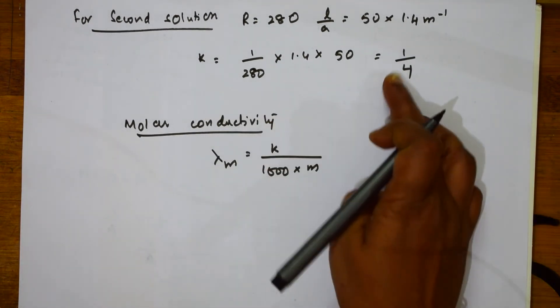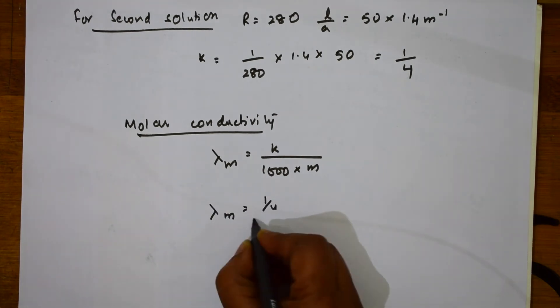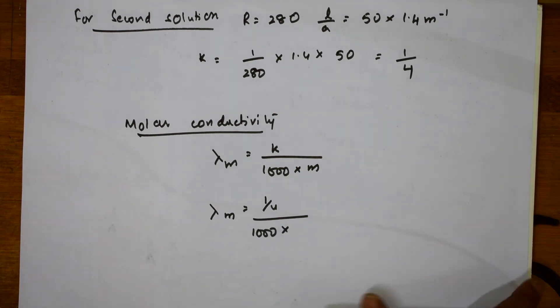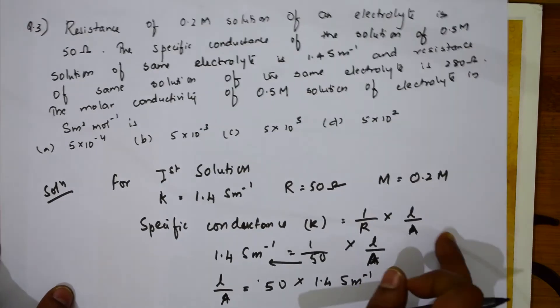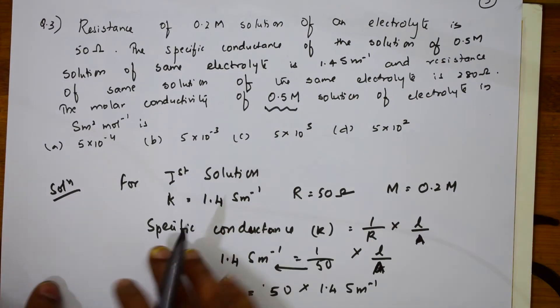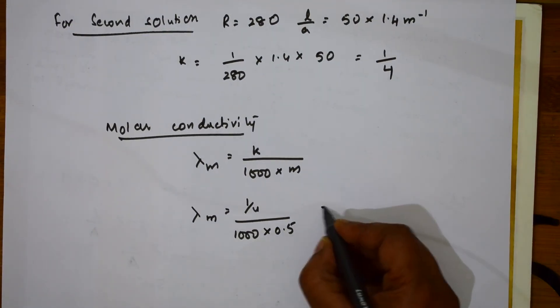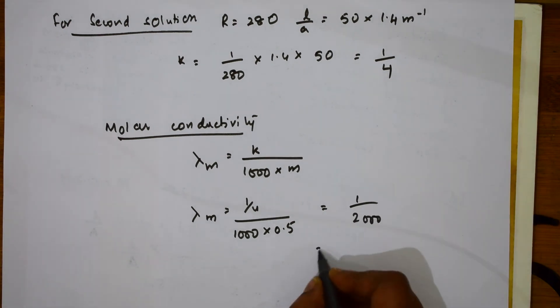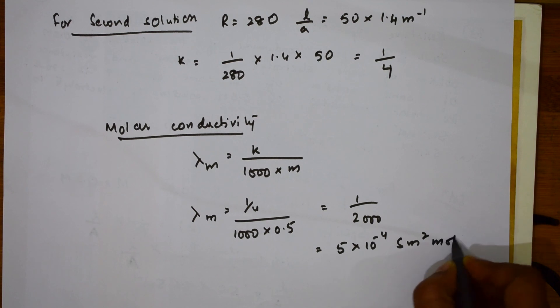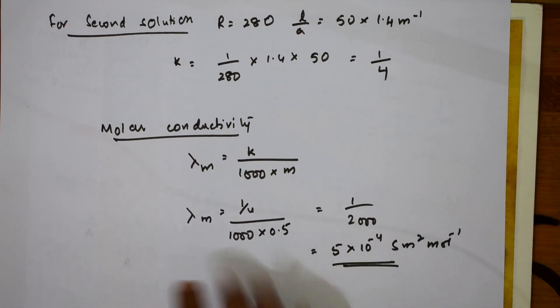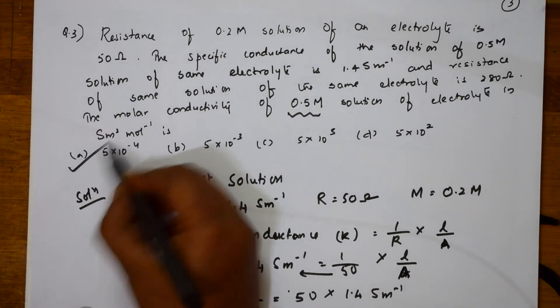Now it's easy. K is ready. I can substitute in this. Molar conductivity is equal to 1 by 4 divided by 1000 into what is the concentration they have given to me? Here, they said I need to find molar conductivity of 0.5 molar solution. So, if I have to substitute, I substitute it for 0.5. How much do I solve? I get 1 by 2000, which is equal to 5 into 10 to the power of minus 4, siemens per mole inverse. That's it. So, what is the answer? 5 into 10 to the power of minus 4. The first option. So, the first option is the answer.